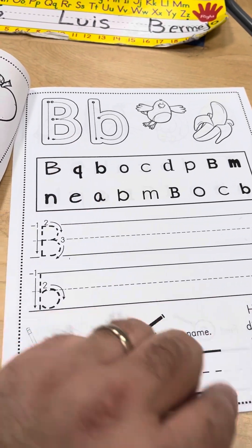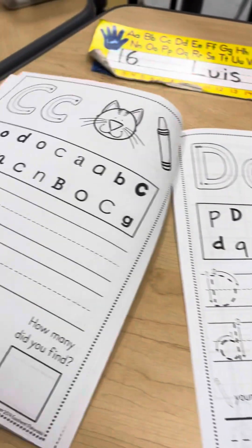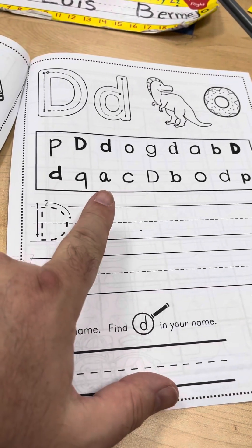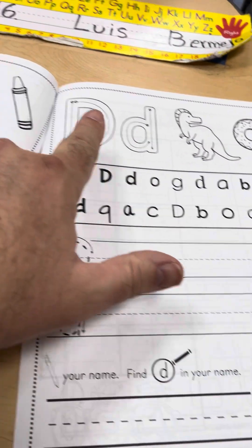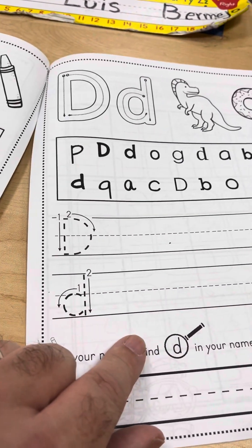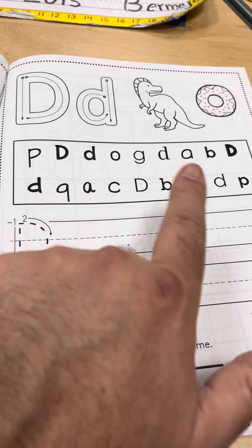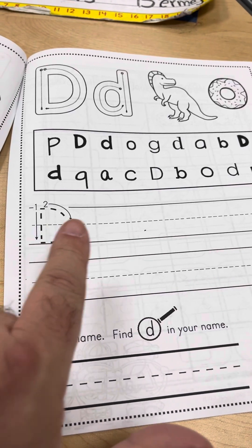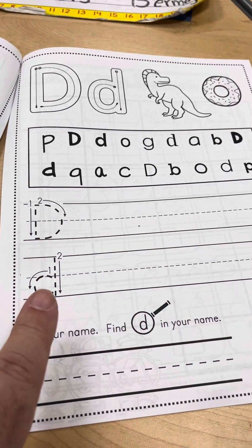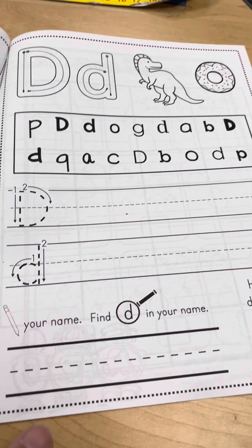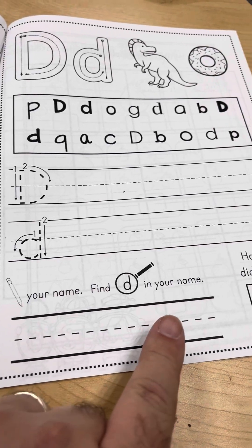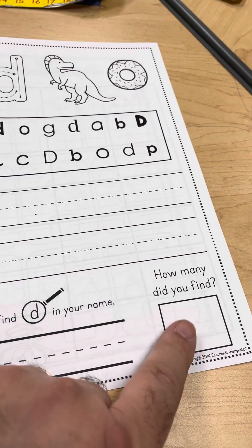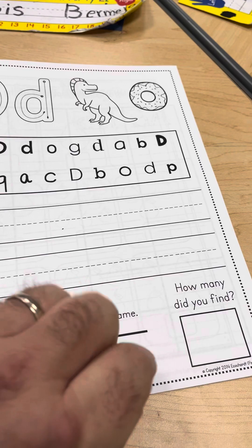Here they're going to do the same thing with the letter B, the letter C, and the letter D. You might check with them and make sure they know the names of these letters. So they're going to trace, they're going to find those letters, they're going to trace and then write some on their own.